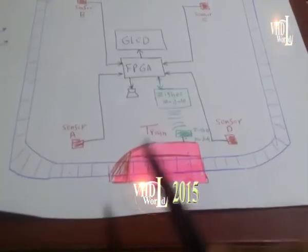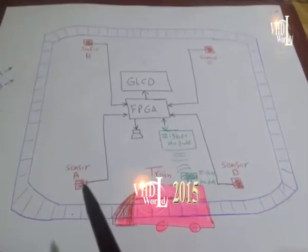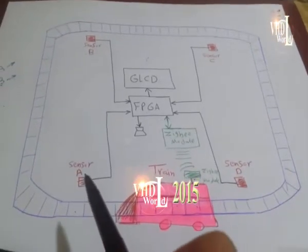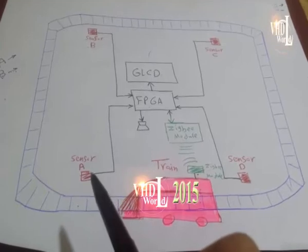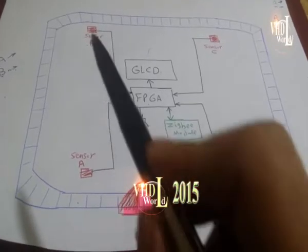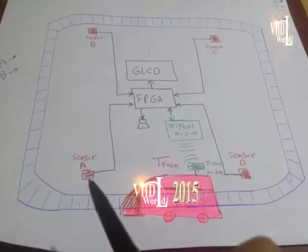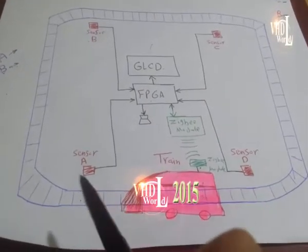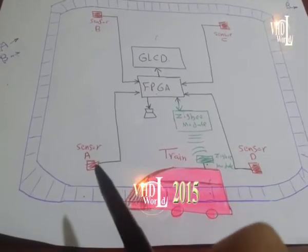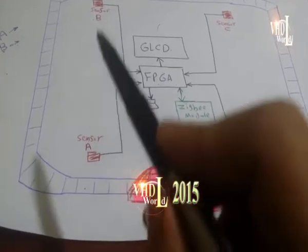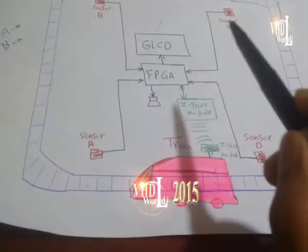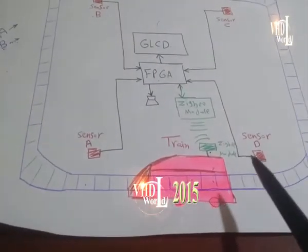In order to do that, we placed four magnetic sensors as shown and named them as Sensor A, which refers to station number A, Sensor B, C, and Sensor D.